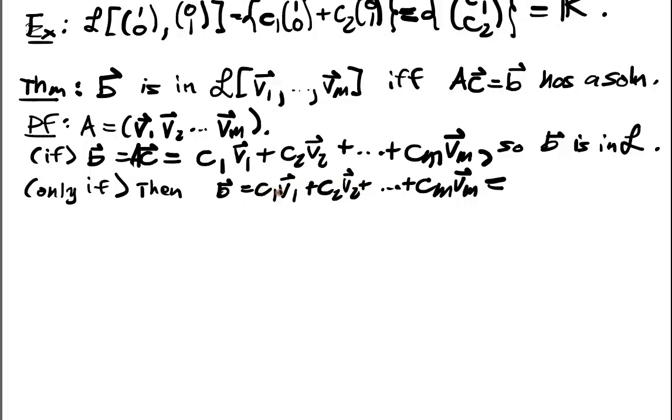It's pretty straightforward proof. And so if we collect all these Cs into a vector C, then we have that this is equal to AC.